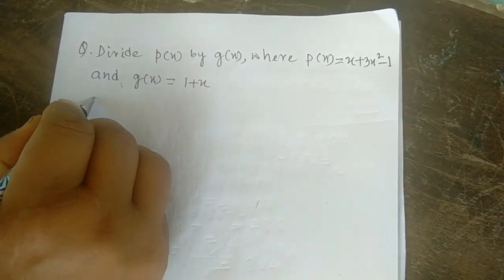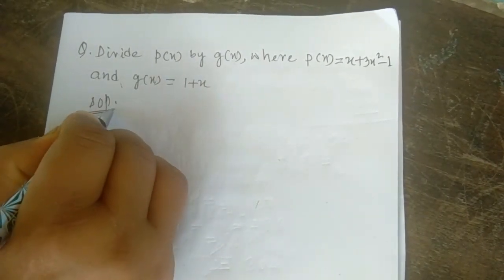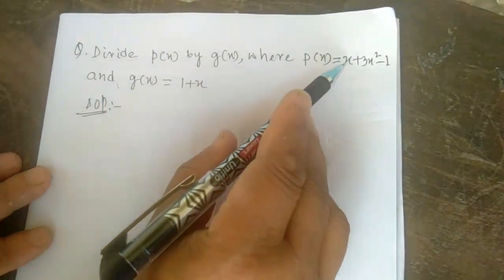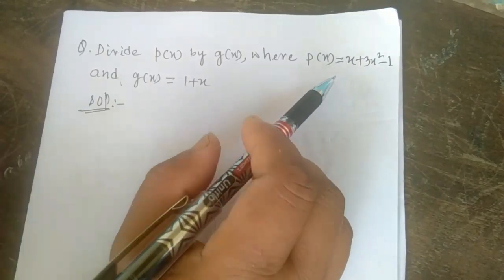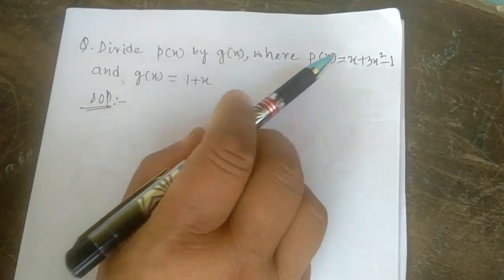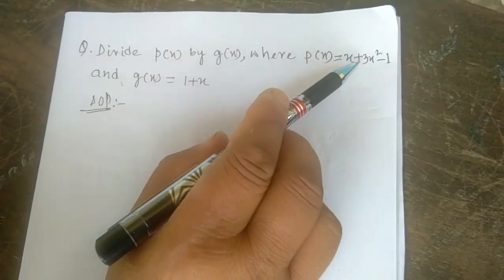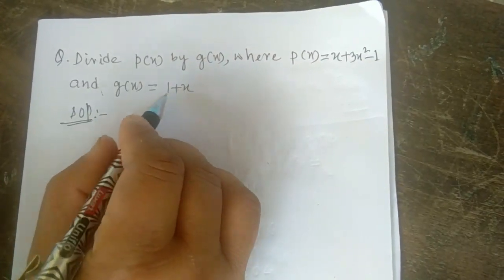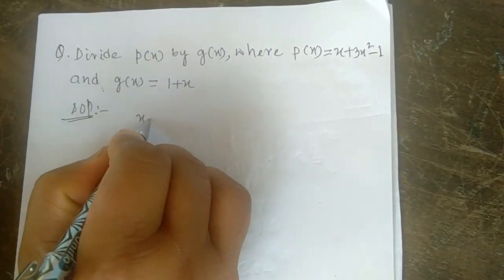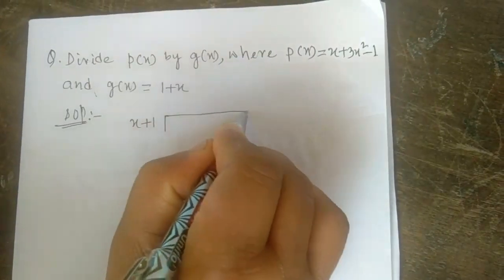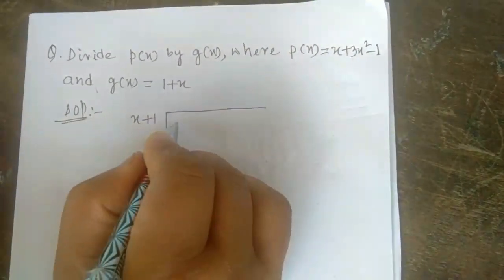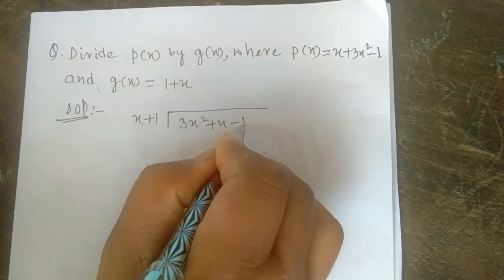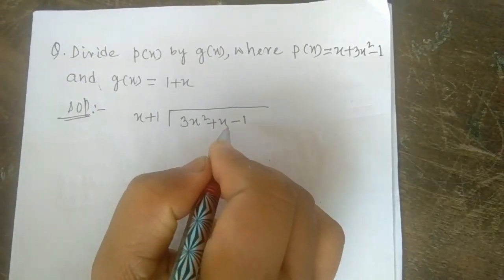So let me show you how to divide. Solution: p(x) is not in order, you see. Whenever you divide, first you have to arrange when it is not arranged. g(x) is 1 + x as given, so you have to arrange it — first write the variable x, then the constant term. Similarly, p(x) also: first write 3x² + x - 1. We have to arrange it after that.